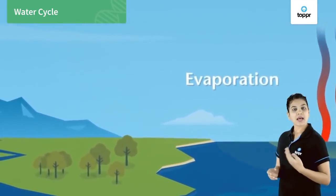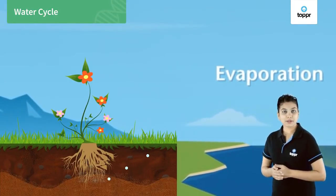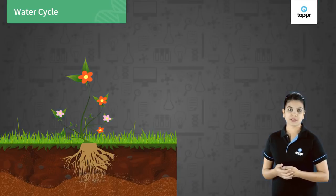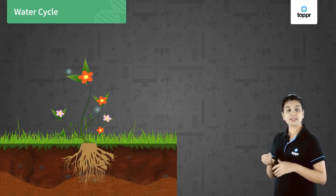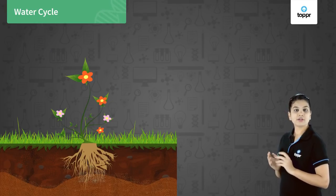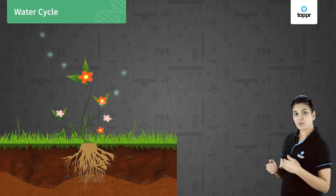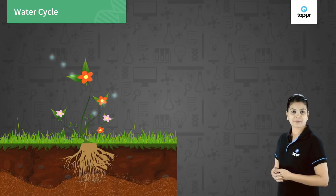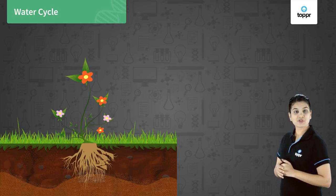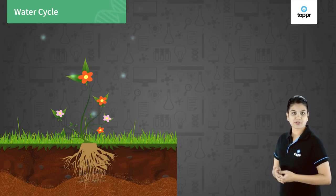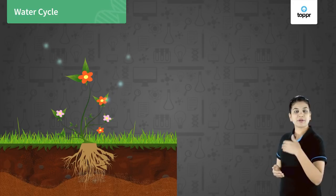Plants continuously absorb water with the help of their roots. Some of this water is utilized within their bodies for the process of photosynthesis, and the excess water is removed from the plant body with the help of leaves — this process is called transpiration. When these water vapors are released out of the plant, they rise up into the atmosphere. Also through respiration, living plants release some amount of water vapors, which also add up into the atmosphere.